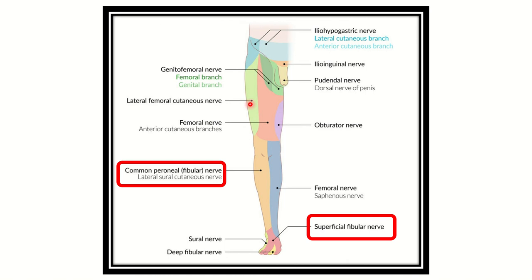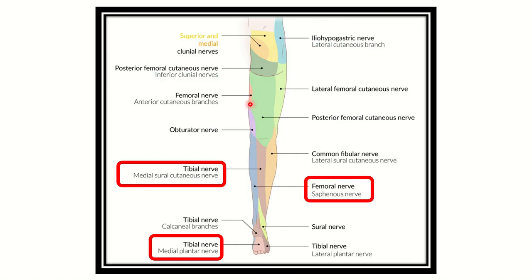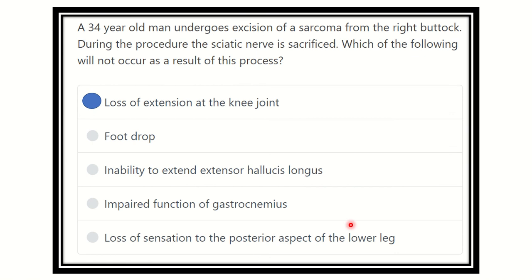In the posterior view, we can see the tibial nerve supplying the posterior part of the leg. The tibial nerve also supplies several areas in the posterior compartment, and the sural nerve supplies only a limited lateral area.